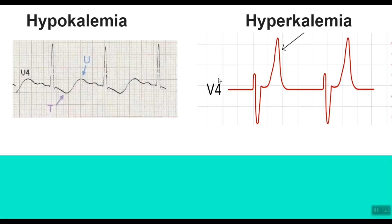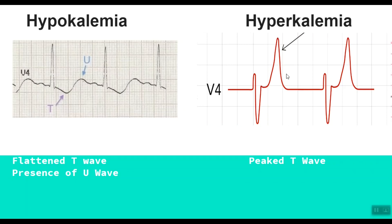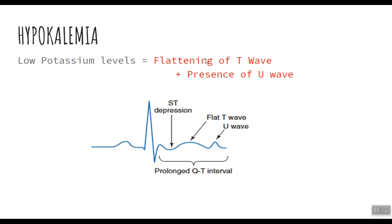On the other side, we're looking at ECG changes during hyperkalemia. One important example of hyperkalemia is diabetic ketoacidosis. Both hyperkalemia and hypokalemia can occur during DKA, so keep that in mind. In hyperkalemia, the ECG shows a characteristic peaked T-wave, as you can see here — really huge and tall compared to the normal T-wave. In hypokalemia, low potassium levels cause the T-wave to flatten and U-waves to appear.